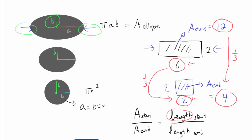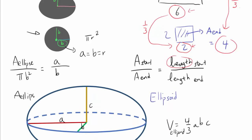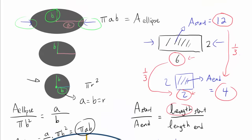Now let's apply this to the ellipse being pushed into a circle. We know that area of the ellipse divided by the area at the end — which is the area of a circle with radius b, so πb² — must equal the side length at the start, a, divided by the side length at the end, b. So the area of the ellipse over πb² equals a over b. Solving for the area of the ellipse, we get a/b times πb², which is π times a times b. We have shown that the area of an ellipse is πab.